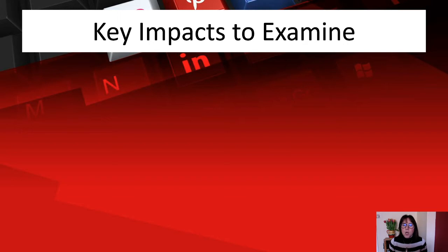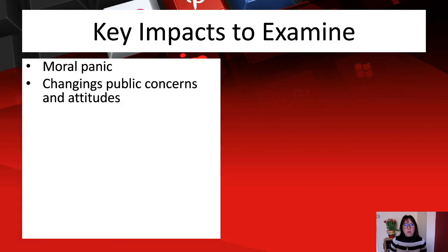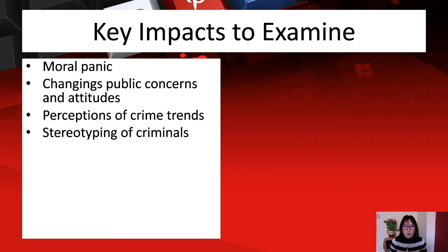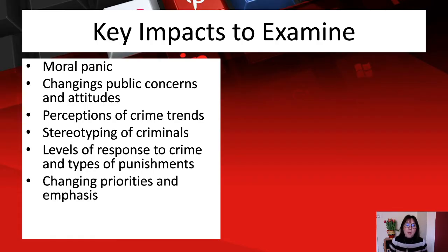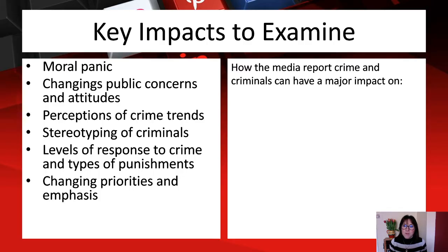The key impacts we're going to examine are: moral panic, change in public concerns and attitudes, perceptions of crime trends, stereotyping of criminals, levels of response to crime and types of punishments, and changing priorities and emphasis. Within this, we'll look at how the media reports crime.